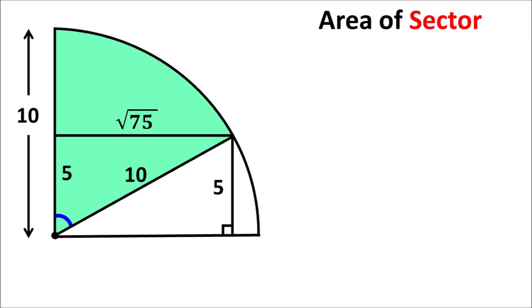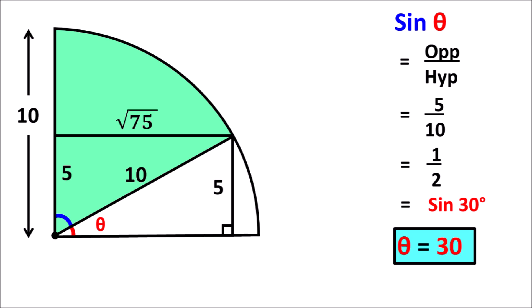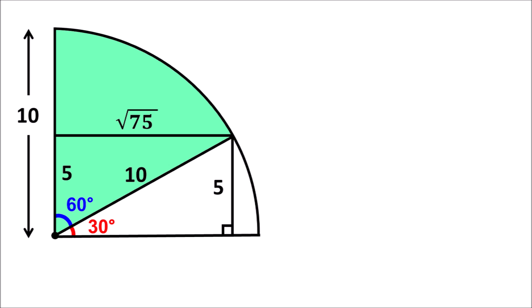Now let us focus on the green highlighted sector. The blue highlighted angle of this sector is not known, so let us focus on the red highlighted angle and call it theta. Sin theta equals opposite side divided by hypotenuse. The opposite side is 5 units and the hypotenuse is 10 units, so sin theta equals 5 divided by 10, which equals one-half. From the sine table, sin 30 degrees equals one-half, therefore theta equals 30 degrees. The blue highlighted angle is therefore equal to 60 degrees, since the total of the blue and red highlighted angles equals 90 degrees as given. So the angle of the green highlighted sector is 60 degrees.